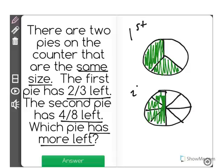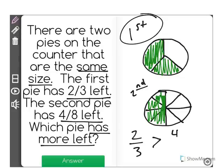the first pie has more left than the second pie. Which means that two-thirds is greater than four-eighths.